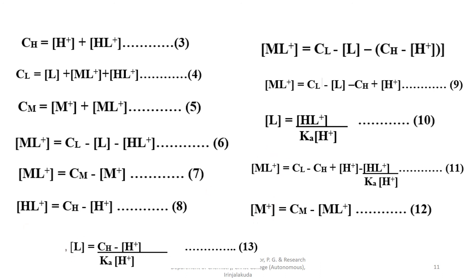These are the spectrophotometric and potentiometric methods used to determine the concentration of complex, ligand, and metal ion.